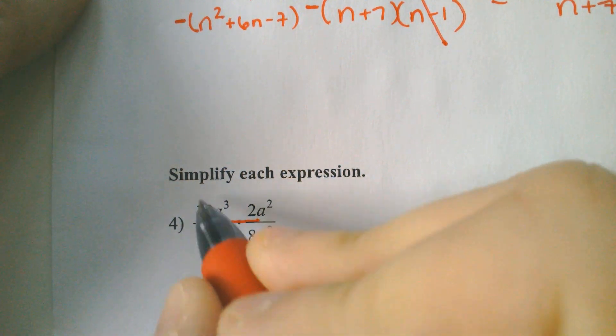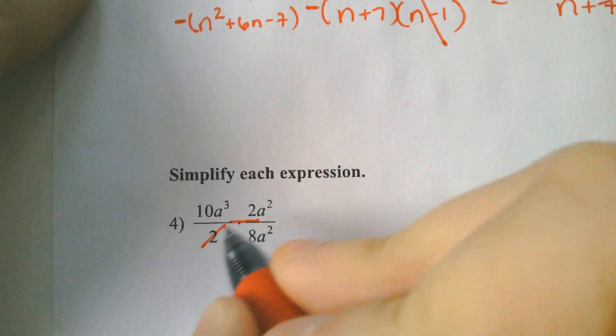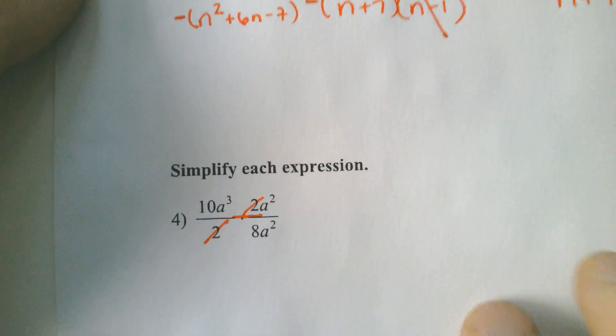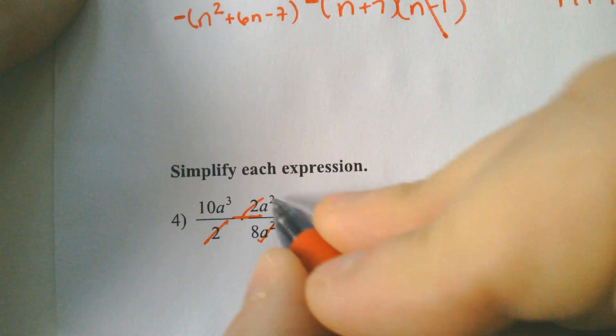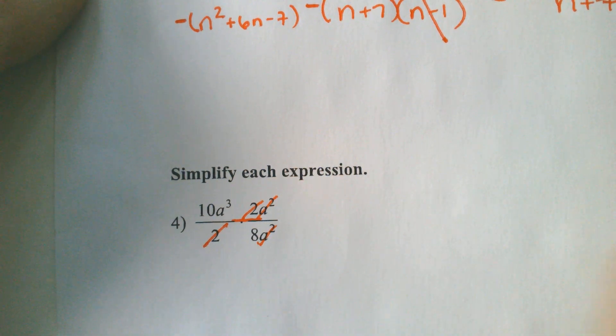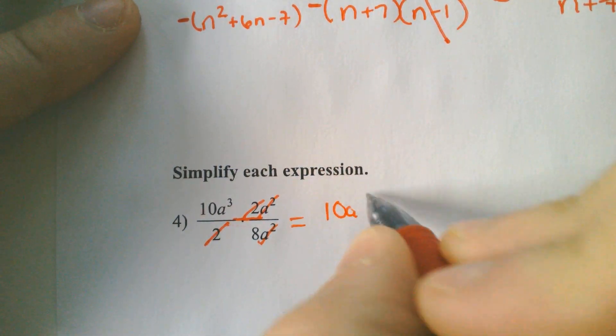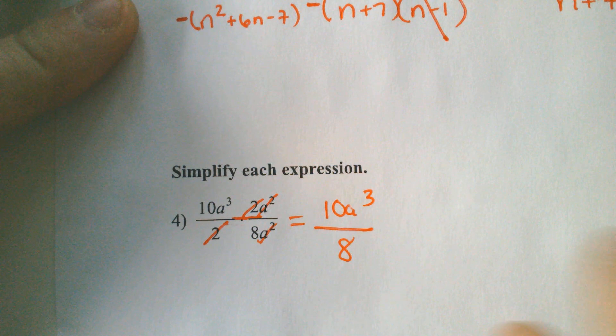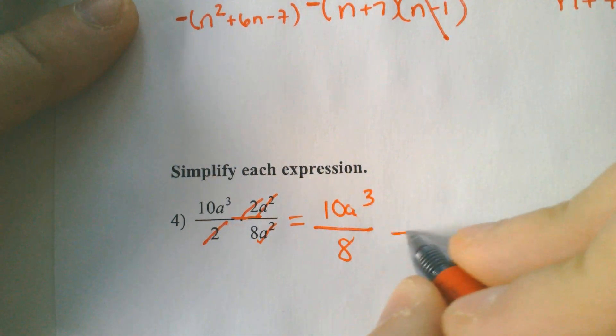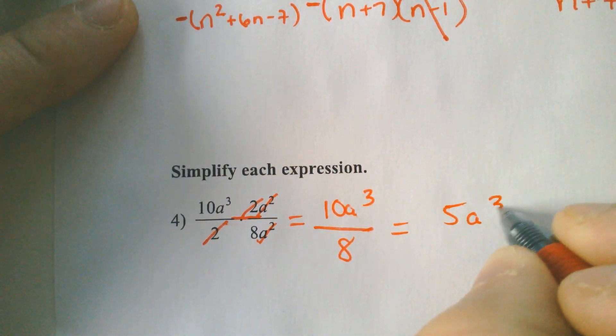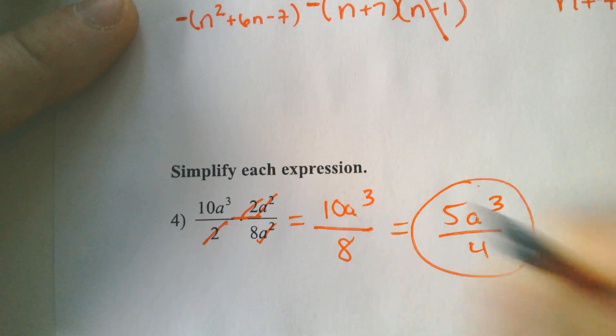So for me, I could do 10 divided by 2 and get 5, but I also could be like 2 over 2, gone. I don't like you. I could also do a squared over a squared, gone. We don't have to multiply before we simplify. So we're really left with 10a to the third over 8, which, oh no, 10 over 8 simplifies. They both divide by 2. That gets us 5a to the third over 4. Final answer.